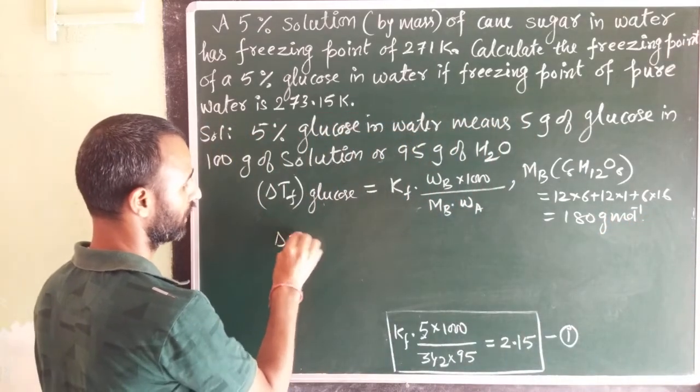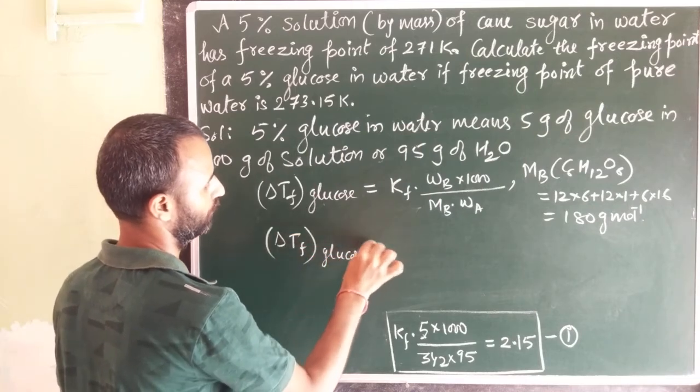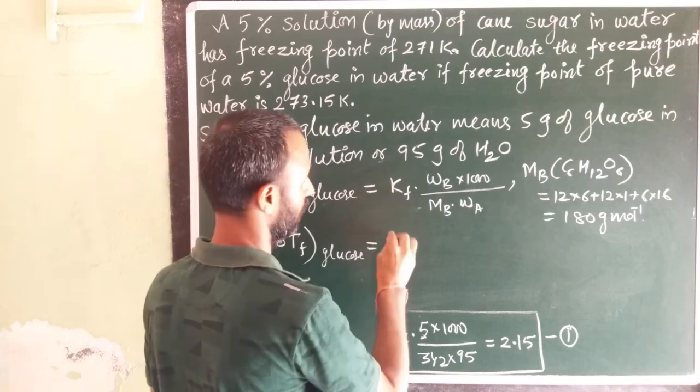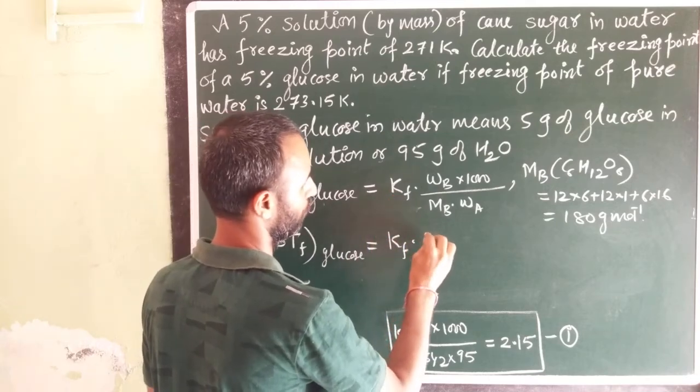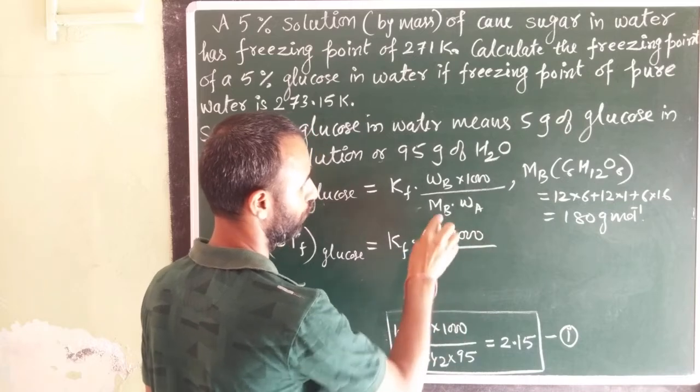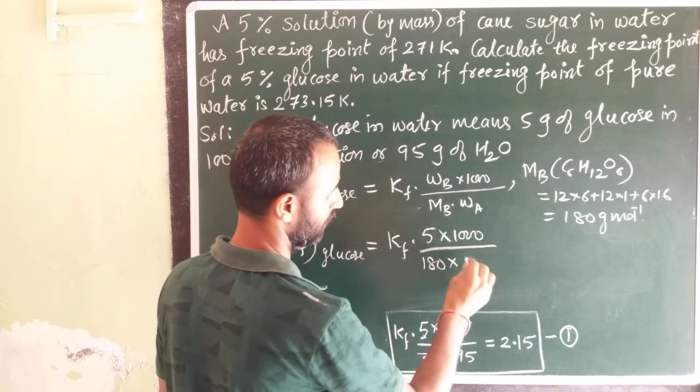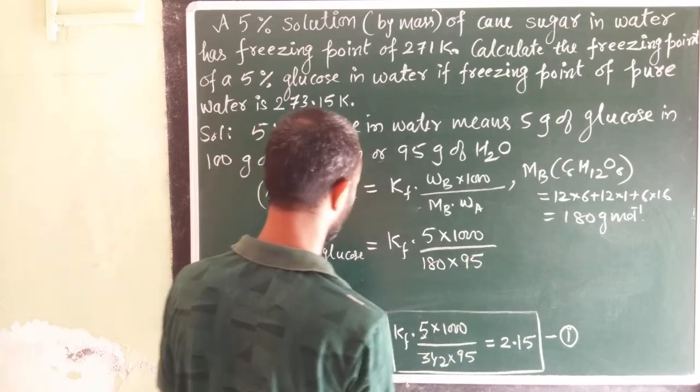Just put the values, so delta Tf of glucose is equal to Kf into 5 into 1000 over 180 into 95.